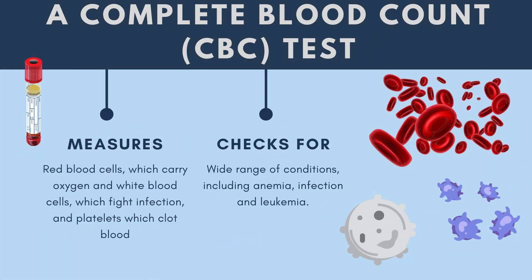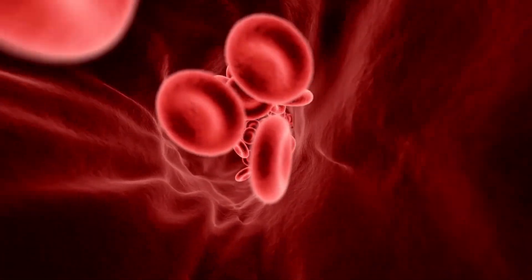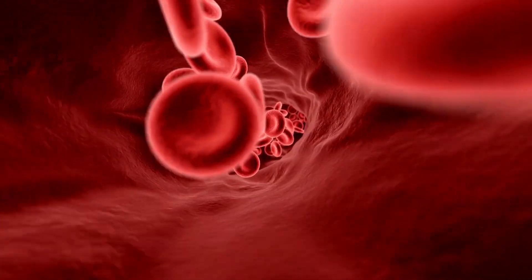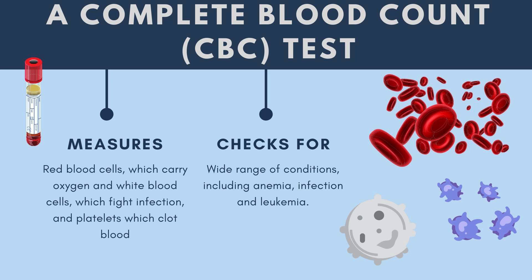The CBC measures amounts of red cells, white cells, and platelets. When red cells are elevated, it's often dehydration — too little water making it look like too many red blood cells. When red cells are reduced, the person may be anemic. There are many causes of anemia, including problems with protein, iron, vitamin B12, chronic infection, or anemia of chronic disease, which we explore further in our courses.